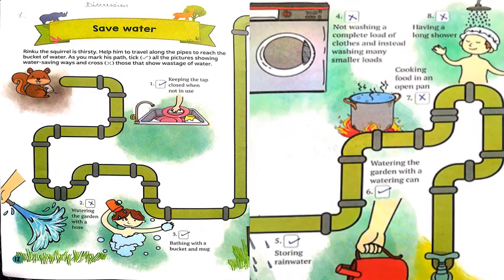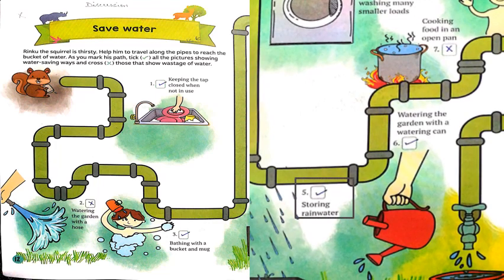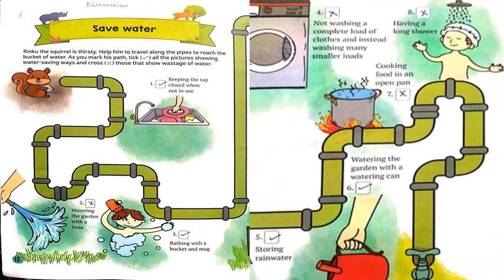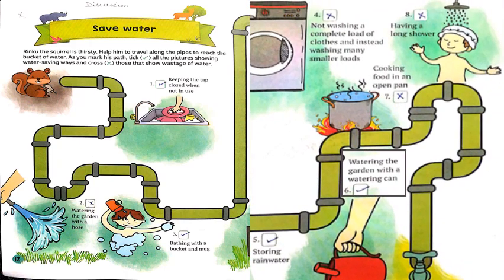The fifth statement is storing rainwater. When rain is there, we should store that water using the technique of rainwater harvesting, so this is a correct statement. The sixth statement is watering the garden with a water can — that saves water, so it is a correct statement.